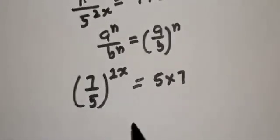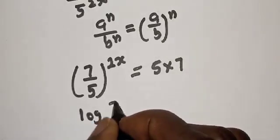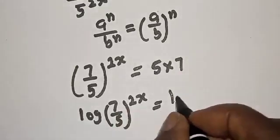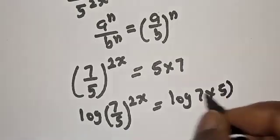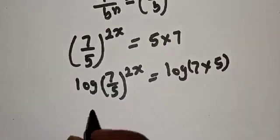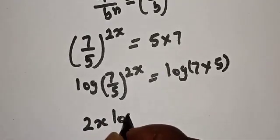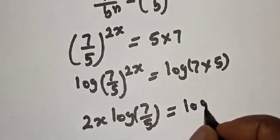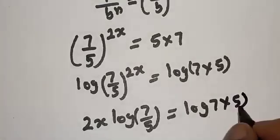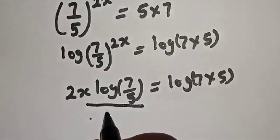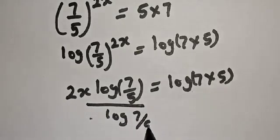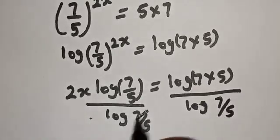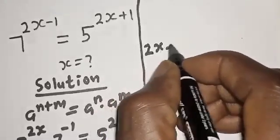Now let's take the log of both sides. Log of 7 over 5 raised to the power of 2s is equal to log of 7 times 5. This gives us 2s times log of 7 over 5, equal to log of 7 times 5. Dividing both sides by log of 7 over 5, we get 2s equal to log 7 times 5 over log 7 over 5.